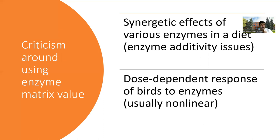For example, if you are using a single enzyme like phytase, it might liberate phosphorus, some amino acids, and energy based on its matrix value. But if you are going to add another enzyme, or use this phytase in a multi-enzyme combination, maybe that matrix value will be a little bit different. That's why we need to use matrix values a little bit more cautiously.